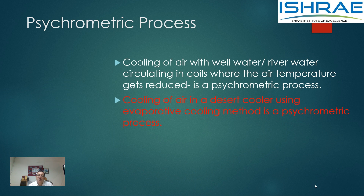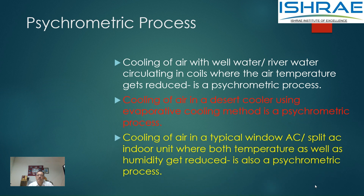Desert cooling is a psychrometric process, and very similar to it we have cooling towers where evaporative cooling is also involved. Cooling of air in a typical window AC, split AC, package AC, or cassette AC indoor unit — where both the temperature and humidity of air get reduced — is also a psychrometric process.